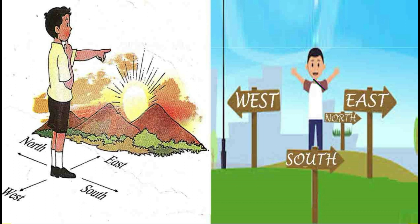Now see the next picture. In this picture, this boy is facing towards South and behind him is North. So South and North are both opposite to each other. This boy's right hand is towards the West and his left hand is towards the East. So West and East are opposite to each other.